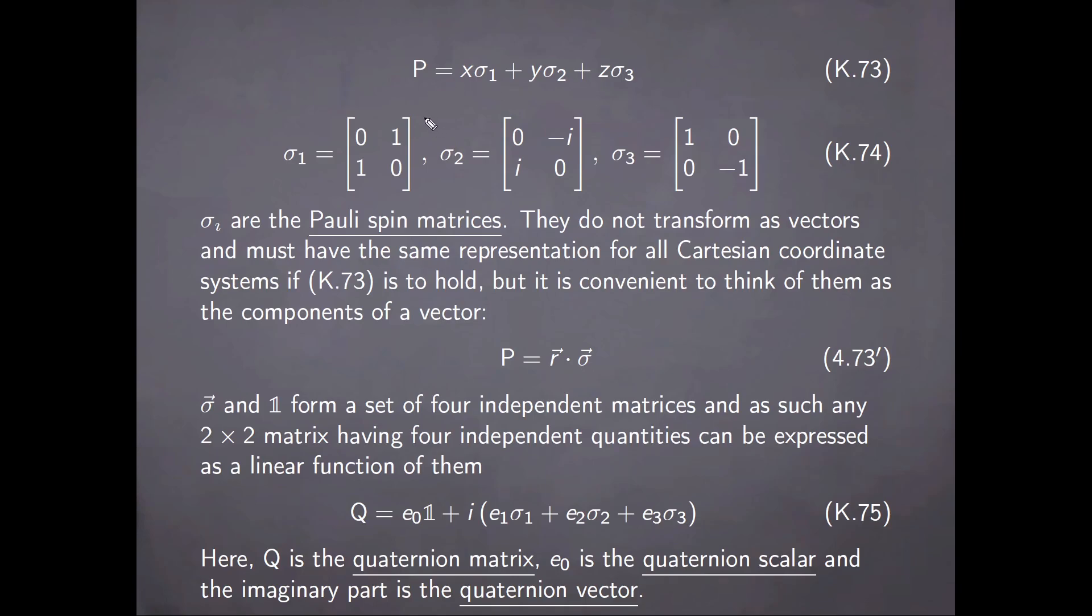The matrix B can also be written in the form here as a sum of three matrices multiplied by the three components of the vector that we are rotating. And these three matrices denoted by sigma of index 1, 2, and 3 have the expression here. They are known as the Pauli spin matrices. They do not transform as vectors and must have the same representation for all Cartesian coordinate systems if equation 73 is to hold. But it is convenient to think of them as the components of a vector, so in order to write the matrix B symbolically as a dot product between the vector R and the quote-unquote vector that would have as components the Pauli spin matrices.